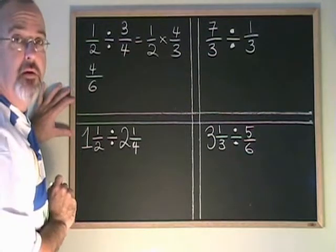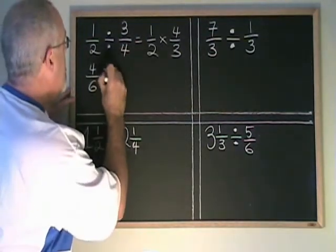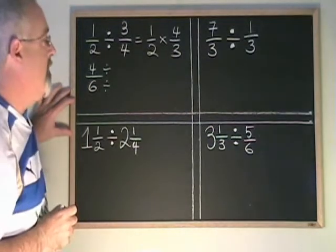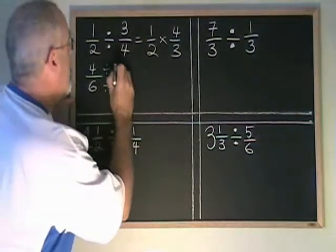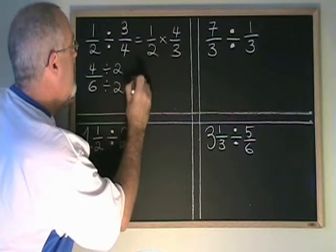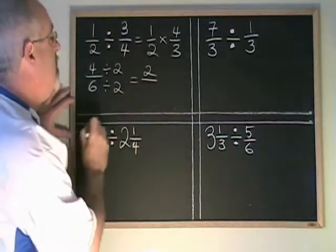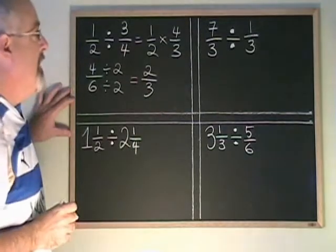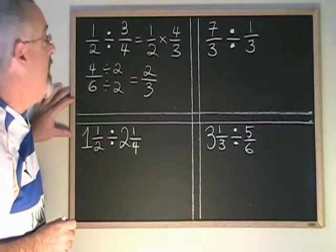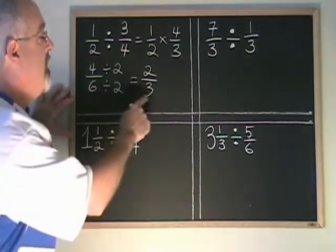This fraction can be reduced, so I'll do it. Since both top and bottom have a common factor of 2, I will divide both top and bottom by 2. 4 divided by 2 is 2. 6 divided by 2 is 3. The answer to the division 1 half divided by 3 quarters is 2 thirds.